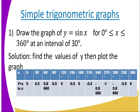We have the first example. Draw the graph of y = sin x for 0° ≤ x ≤ 360° at an interval of 30°. Solution: you are supposed to first of all get the values of x. Remember the interval is 30.